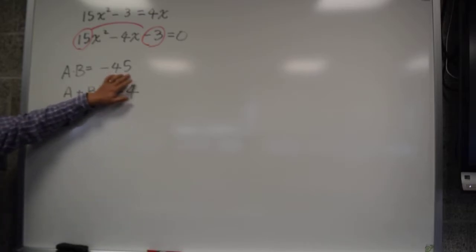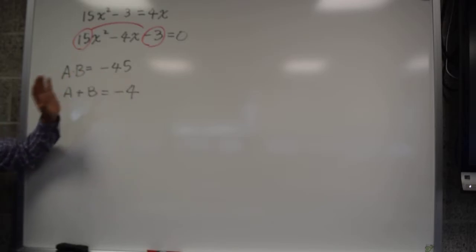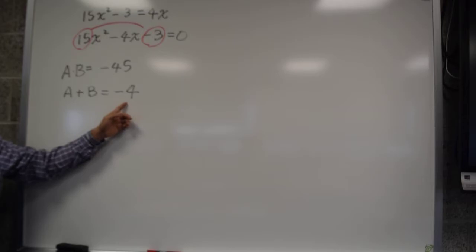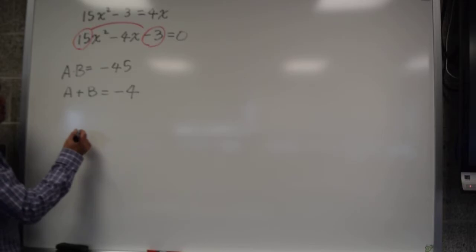So think about this. If you have 9 times 5 is 45, 9 and 5, do their difference give you negative 4 or 4? No. Oh, so that does work, right? So now let's think about exactly what numbers we need.